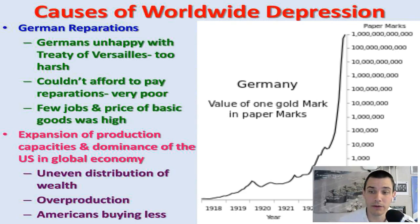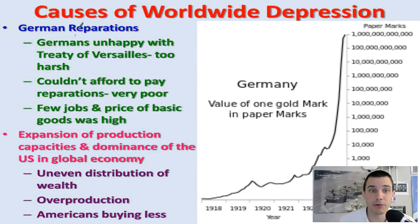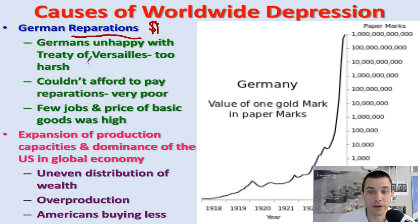We know it here in America as the Great Depression, and we kind of think of it as an American thing, but this was actually a worldwide depression, and it was actually probably worst in Germany. After World War I, Germany had to pay reparations — money back to the Allied powers they lost the war to. This was one of the demands of the Treaty of Versailles, and it was typically seen as a very harsh penalty.